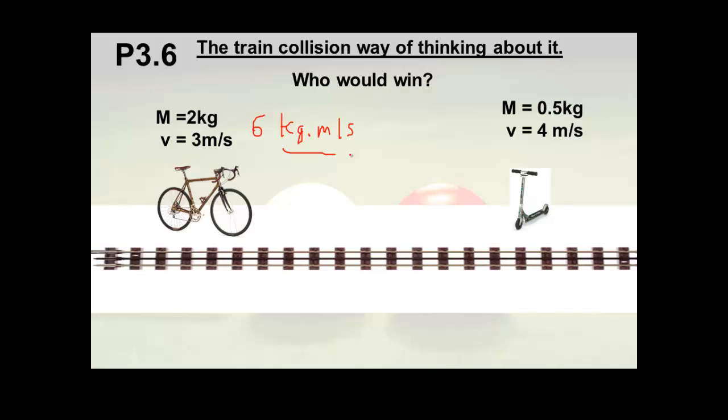So do that every time. 0.5 times four, well that's two. Two kilograms meters per second. They really should have come up with a short unit for momentum, but they didn't. It's stuck like that.